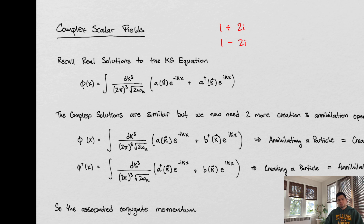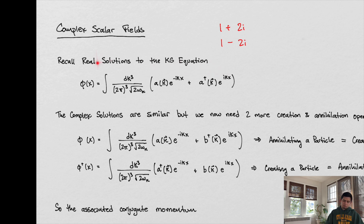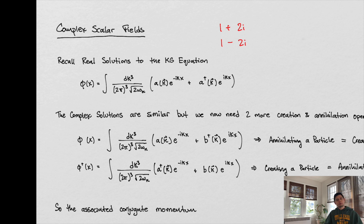Now let's see what this means for our fields and solutions. Let's recall that the real solution to our Klein-Gordon equation — remember, the Klein-Gordon equation describes scalar fields — looked like this. We took some time parsing it out, understanding that it's an oscillating field with a conjugate momentum, and these are fundamentally operators that exist everywhere in space.